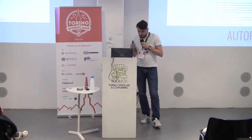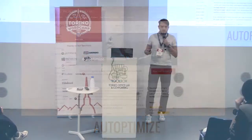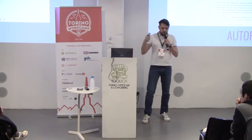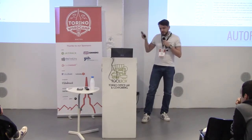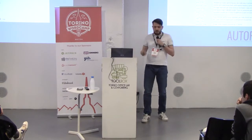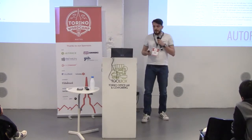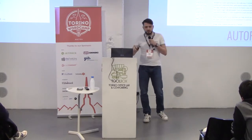Another plugin I use often is Autoptimize. Because I'm using Nginx as a reverse proxy, I don't need any file caching done by a WordPress plugin, since serving content from the server's memory is way faster than anything a plugin can do. So once caching is handled by the reverse proxy, I just have to take care of the other parts. A big chunk of that is CSS and JavaScript files, and Autoptimize does a great job when it comes to minifying those.